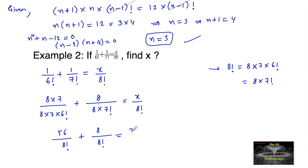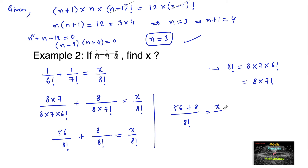So this gives us 56 plus 8 upon 8 factorial, which equals x upon 8 factorial — just using our normal LCM method. Since both sides have the same denominator, 8 factorial gets cancelled, and we can write x is equal to 56 plus 8. So the value of x is 64.